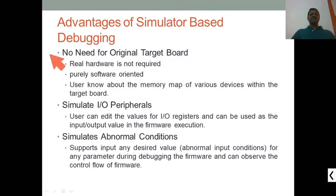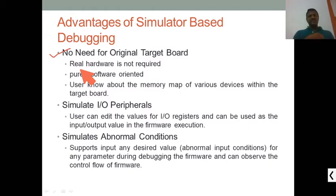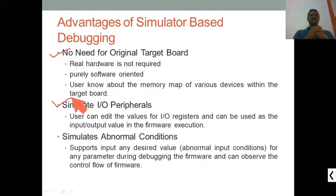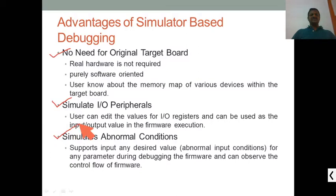The advantage of a simulator is that no original target board is needed, so no one needs to purchase it just to develop firmware — those who have the target board can also test the program. However, simulating IO peripherals is a major problem. For example, if you want to test a temperature sensor, camera, or any other sensor, that is difficult in a simulator. One advantage is that the simulator supports abnormal conditions and desired values that hardware may not support.